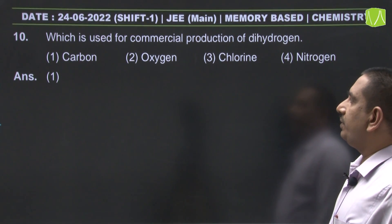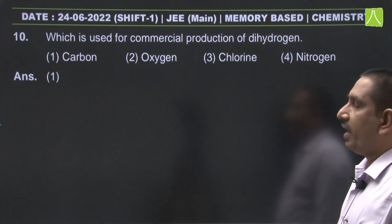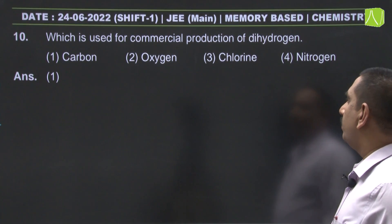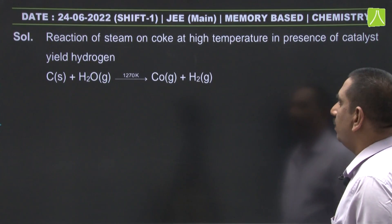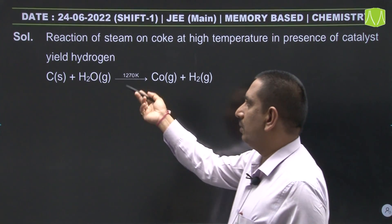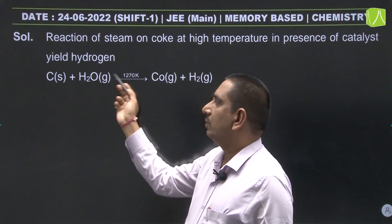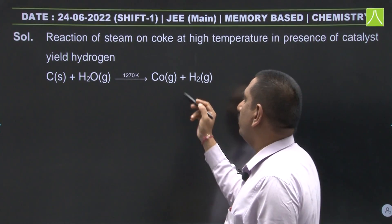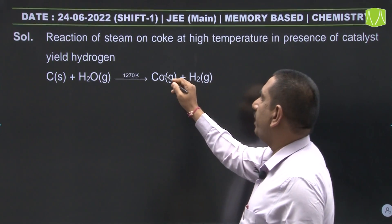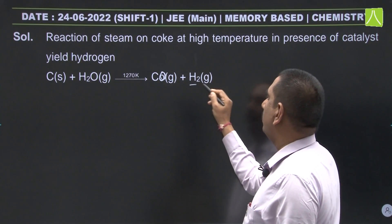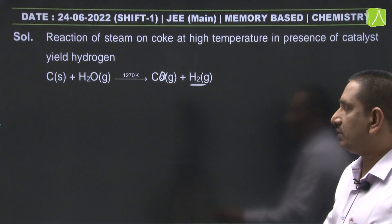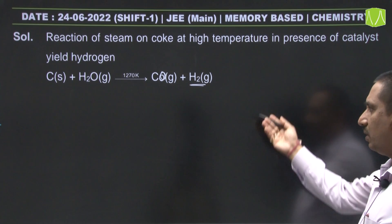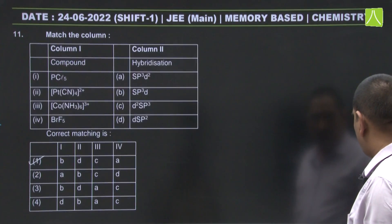Next: which process is used for commercial production of dihydrogen? Commercially, hydrogen is prepared by passing steam over red hot coke, giving carbon monoxide and hydrogen gas. This is also called water gas or syngas.